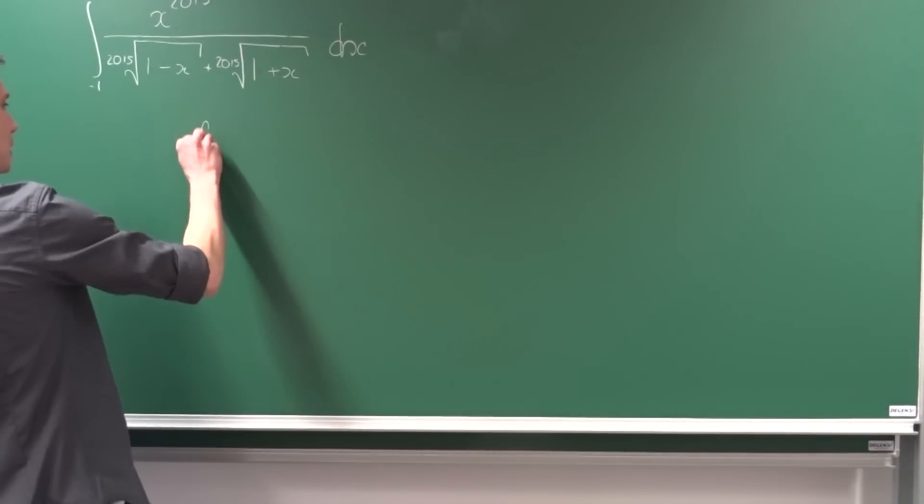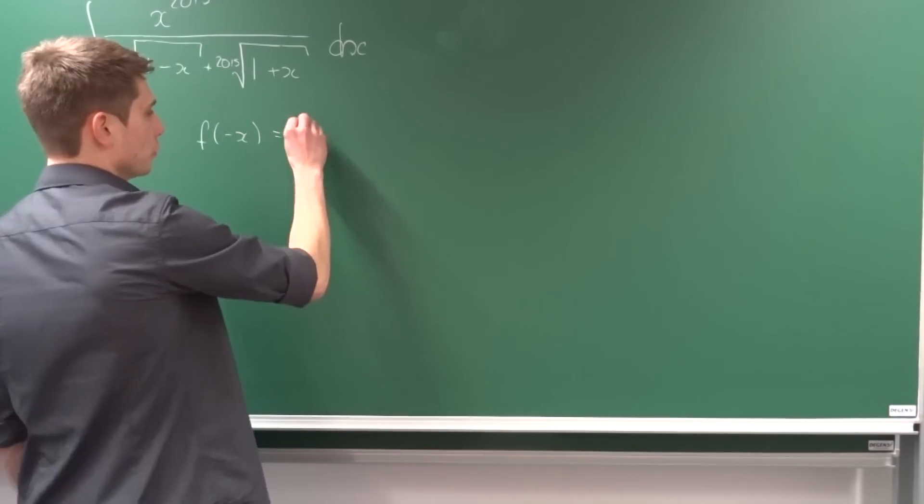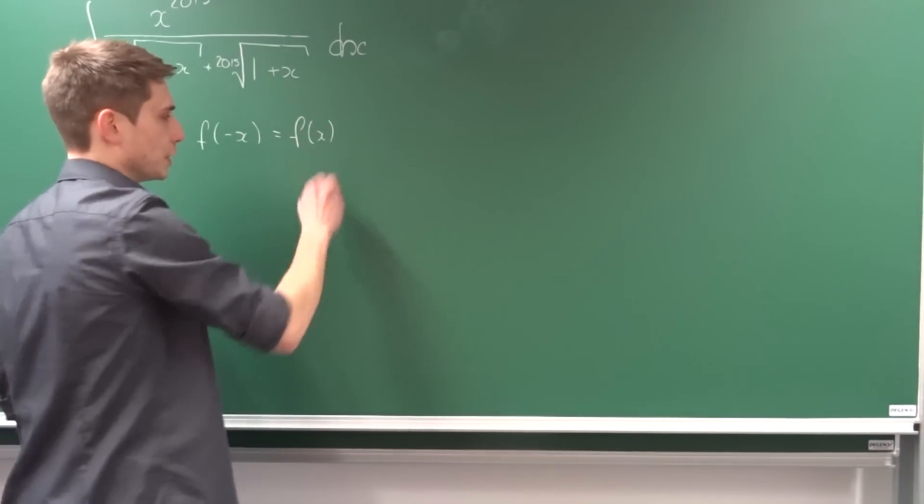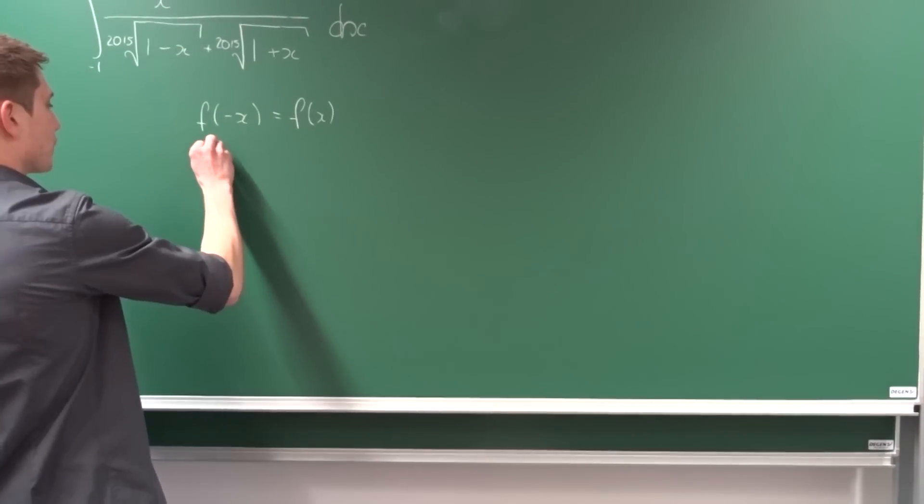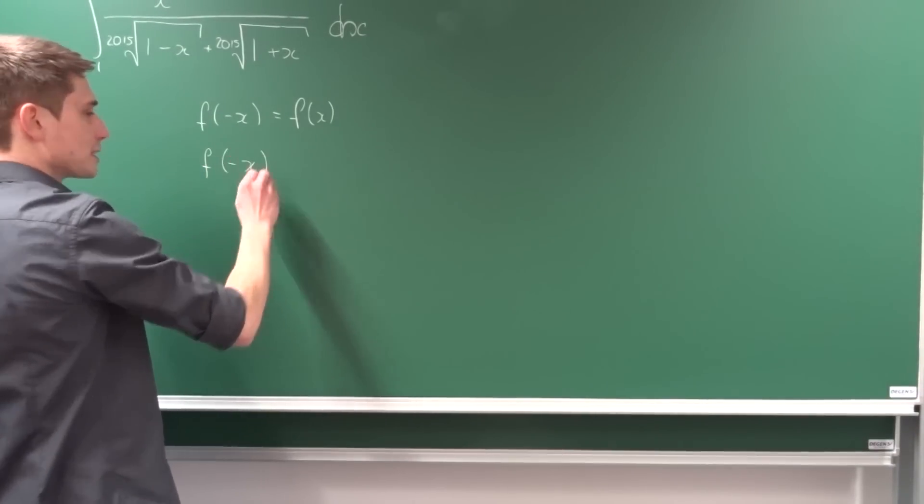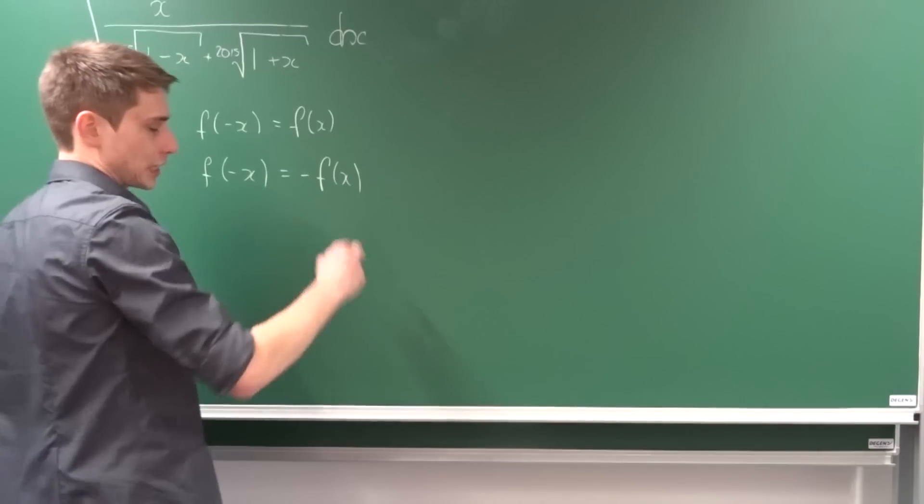An even function means if you plug into this function minus x, we would still end up with the function itself, f of x, for example the cosine in this case. And for an odd function, if we plug in minus x into here, we would end up with minus the function itself, for example the sine.